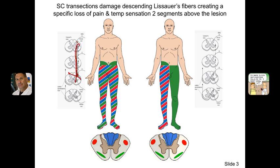If you use the Blumenfeld book, you'll find that this extra area is missing in that figure. Also, he has a picture of the cervical spinal cord. I've included a real thoracic segment in the figure, and this has been corrected from the book.